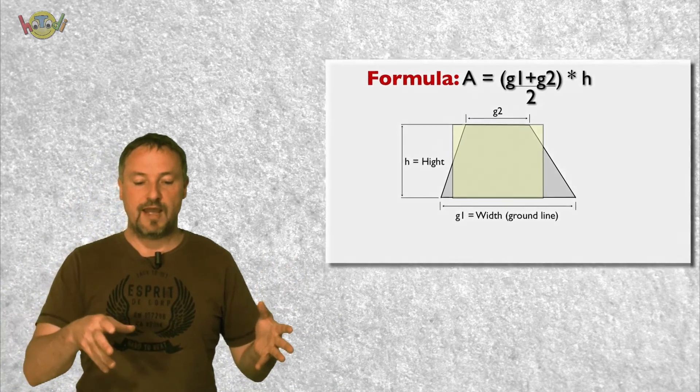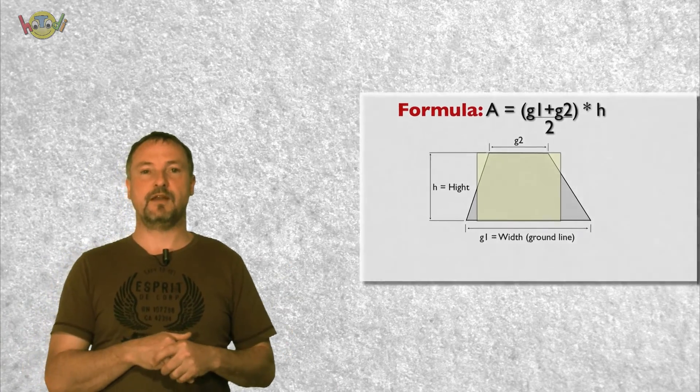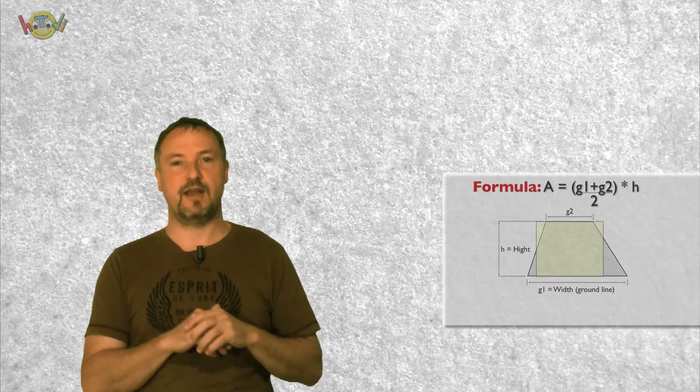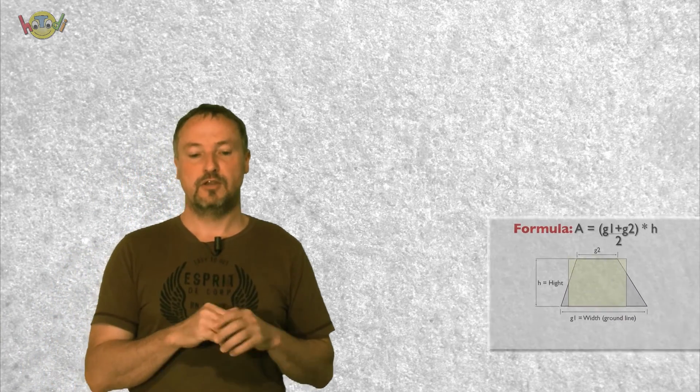If you would have a trapezoid with 4 different lengths, you do exactly the same just with all 4 sides. There is nothing more to say about it because that's it — this is the way how to calculate a trapezoid. It's simple, it's funny, it's easy.